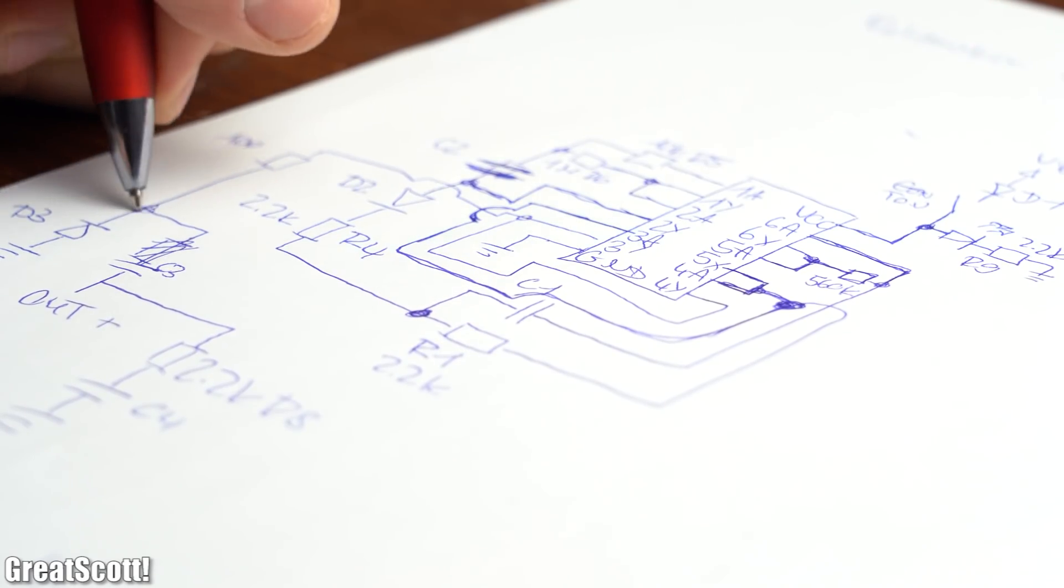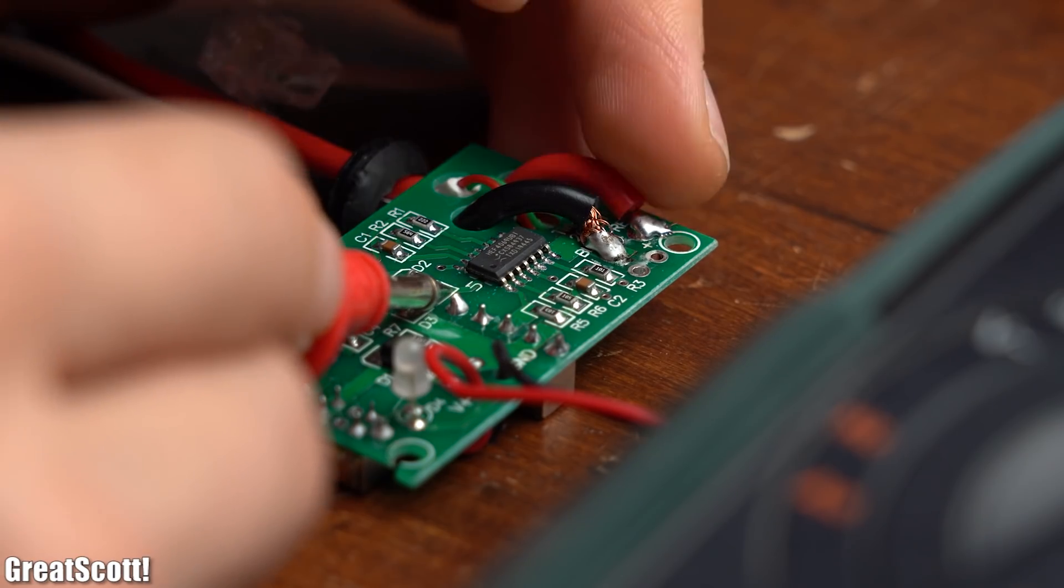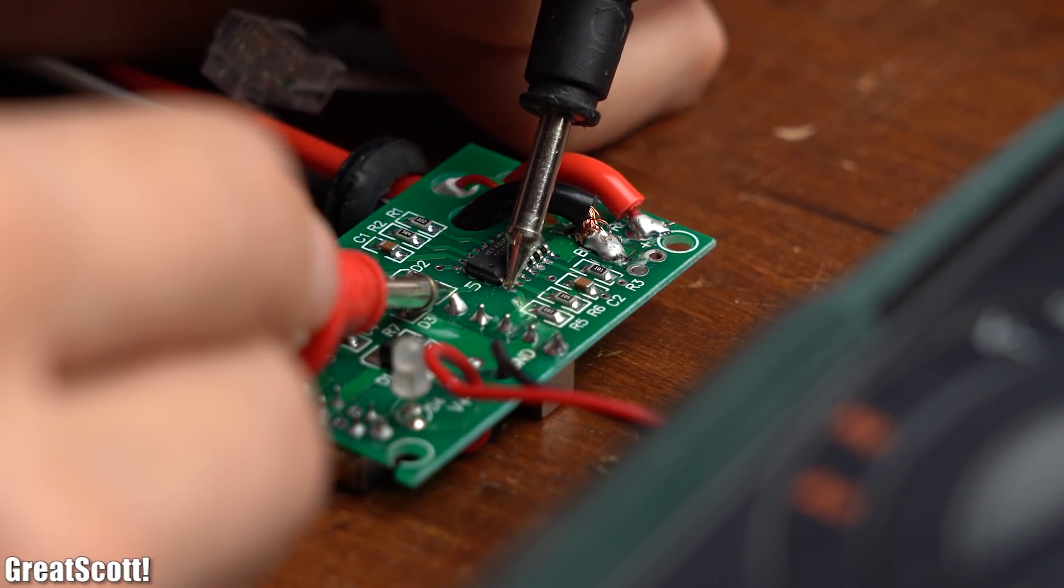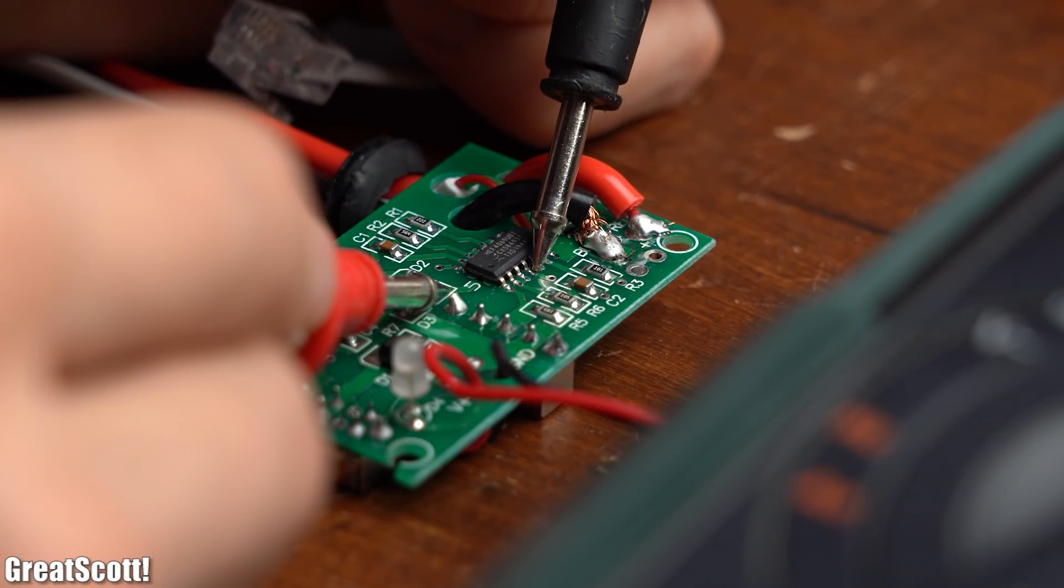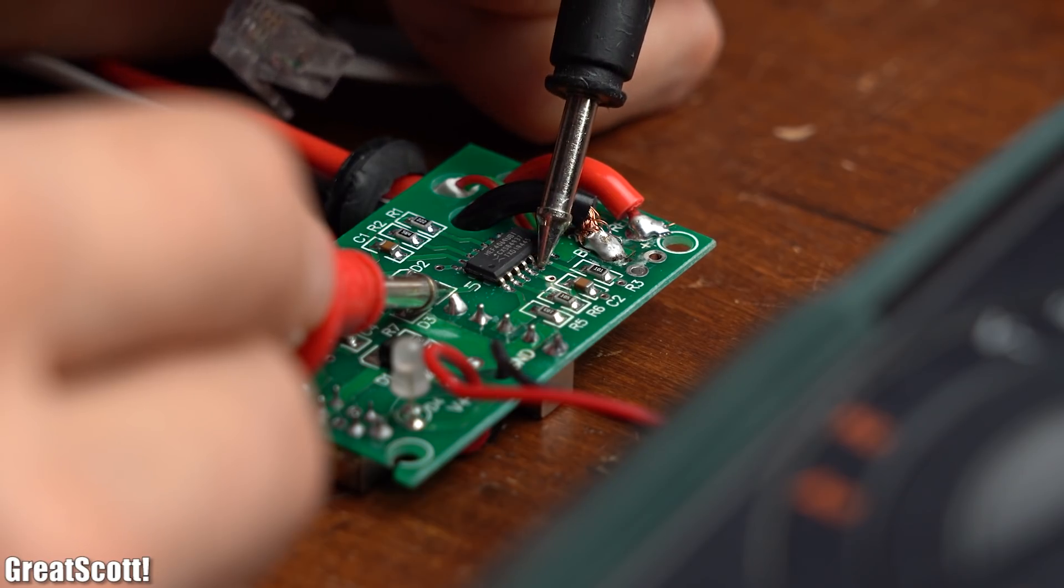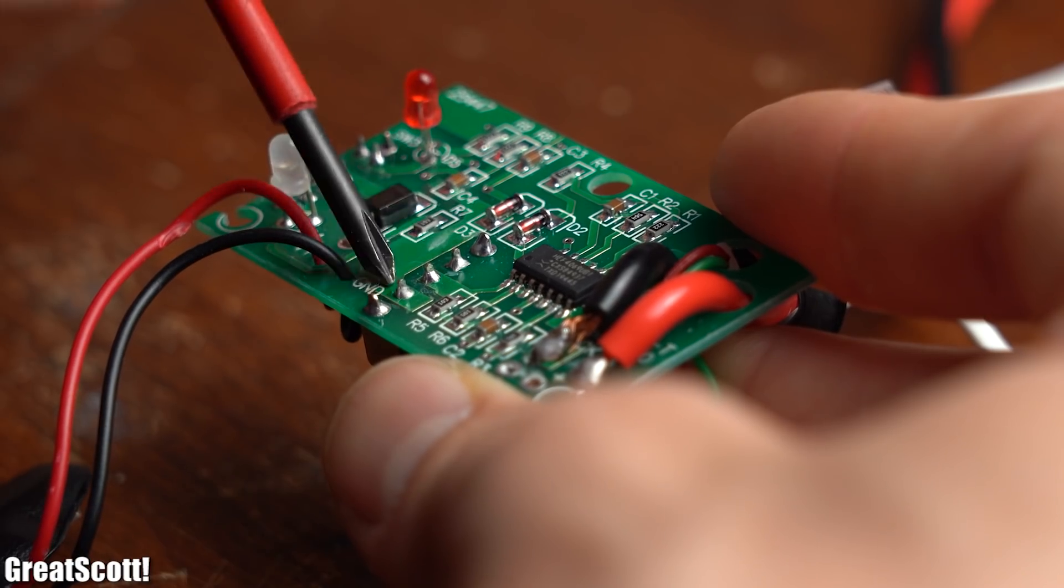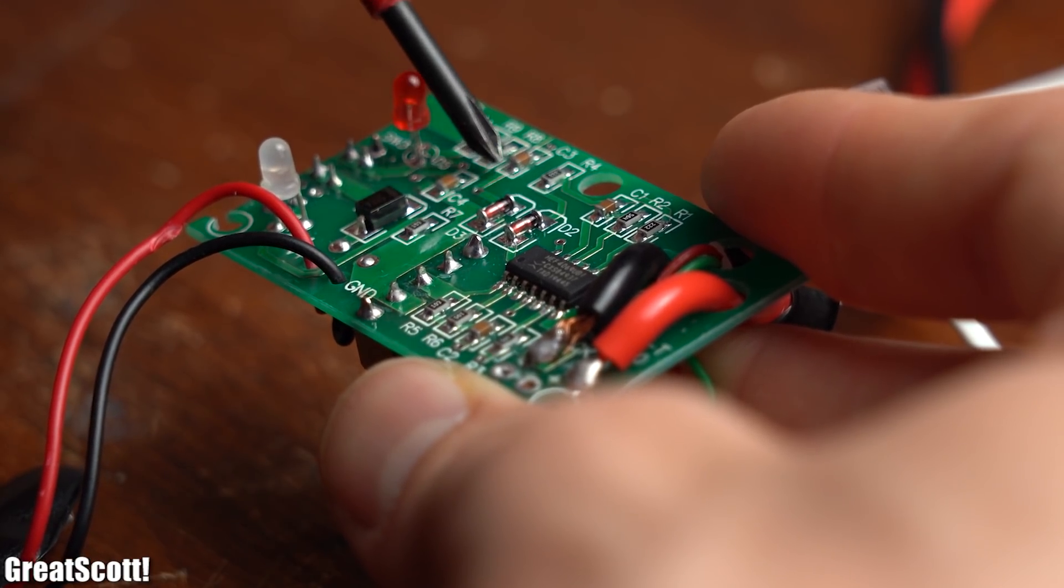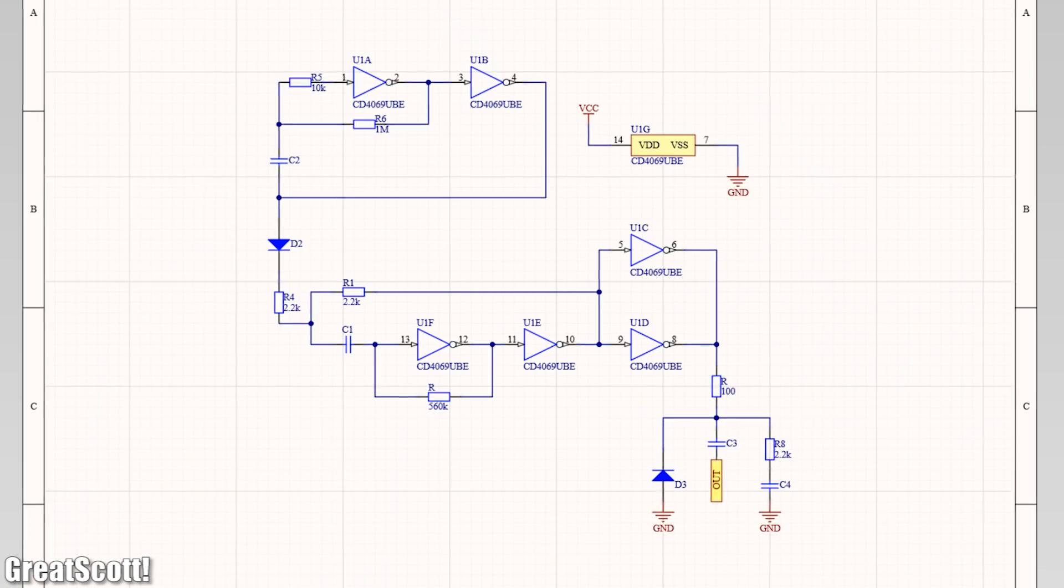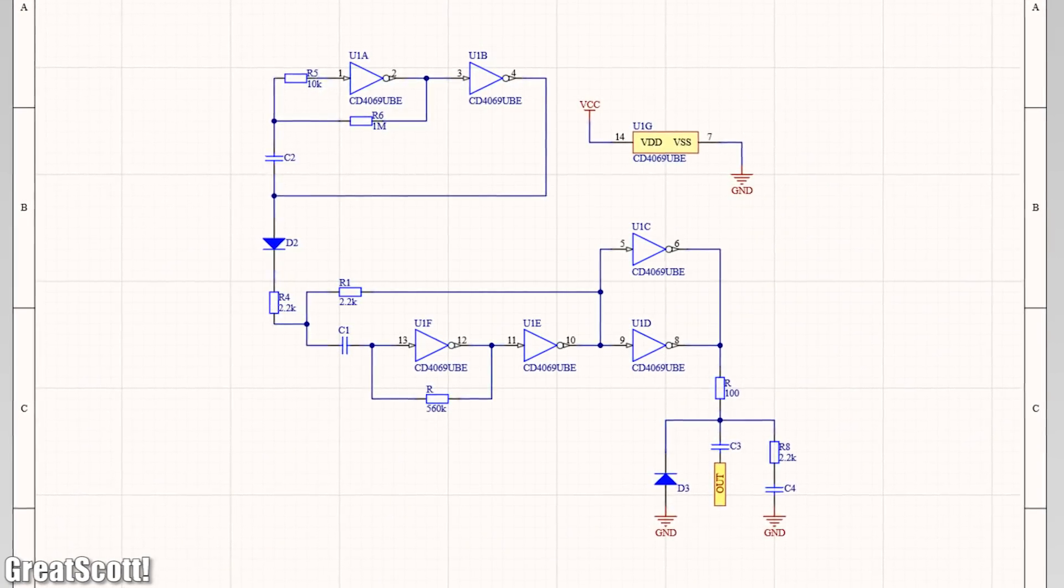At some point I also had to use my multimeter with its continuity function, but overall, like previously stated, this circuit was pretty straightforward to reverse engineer. But that does not mean that the circuit itself is easy to understand, which you might agree with while looking at this finalized schematic.